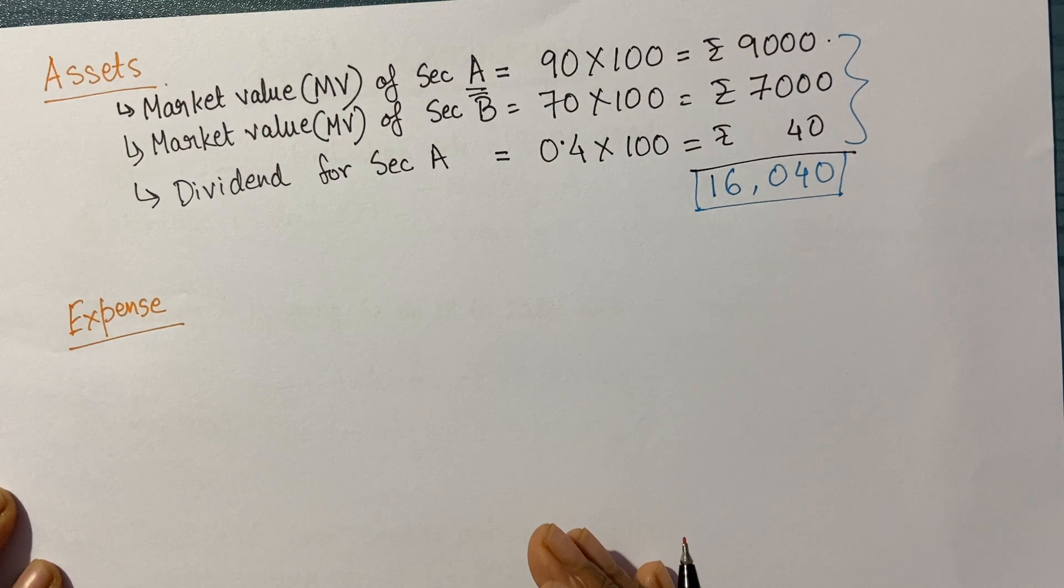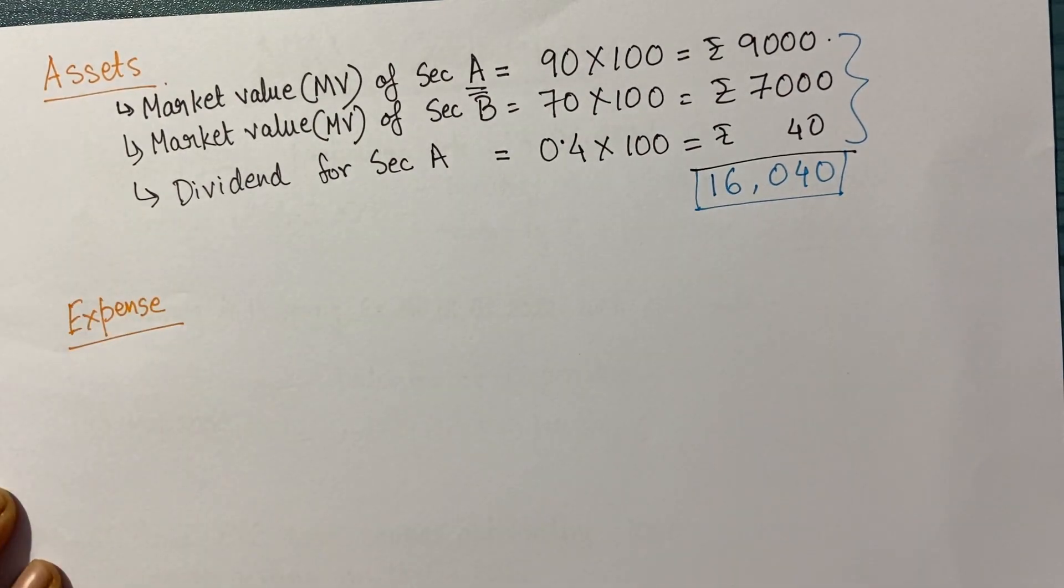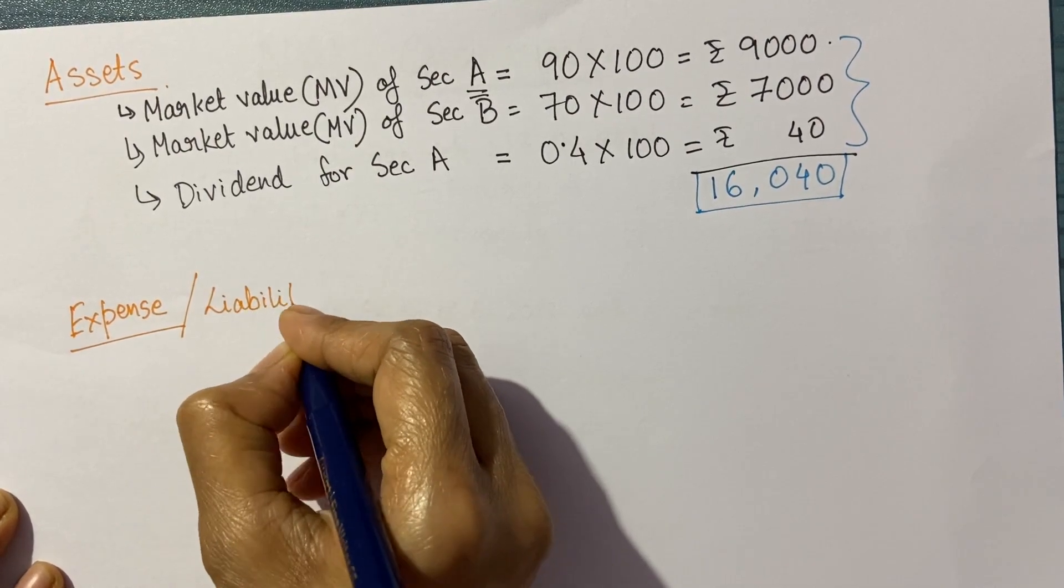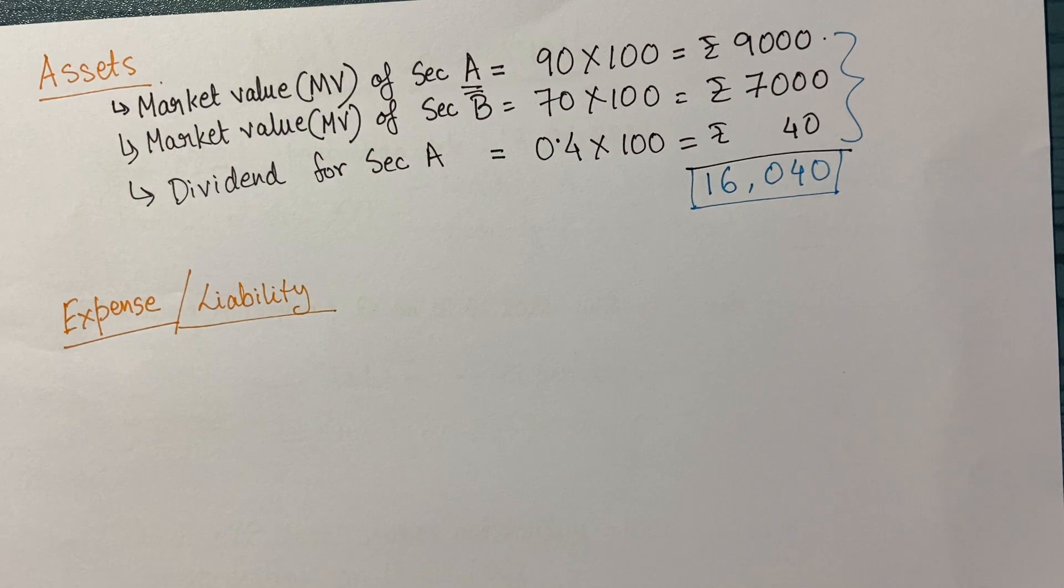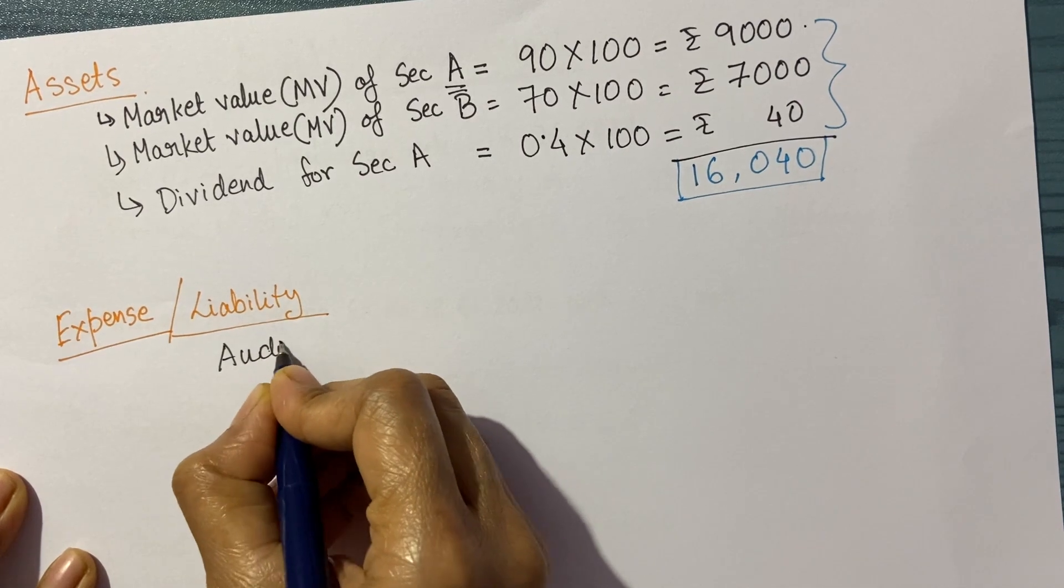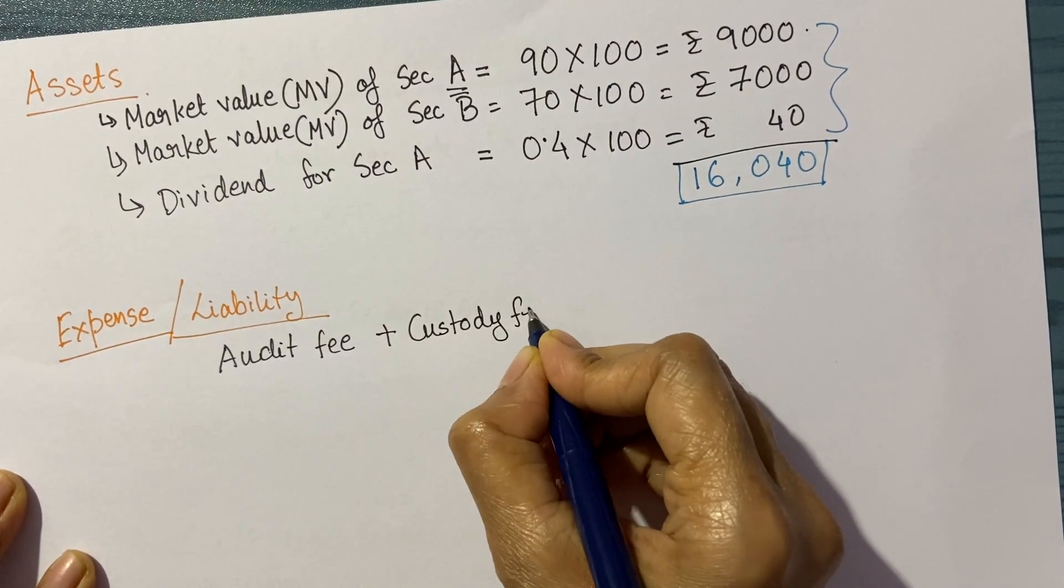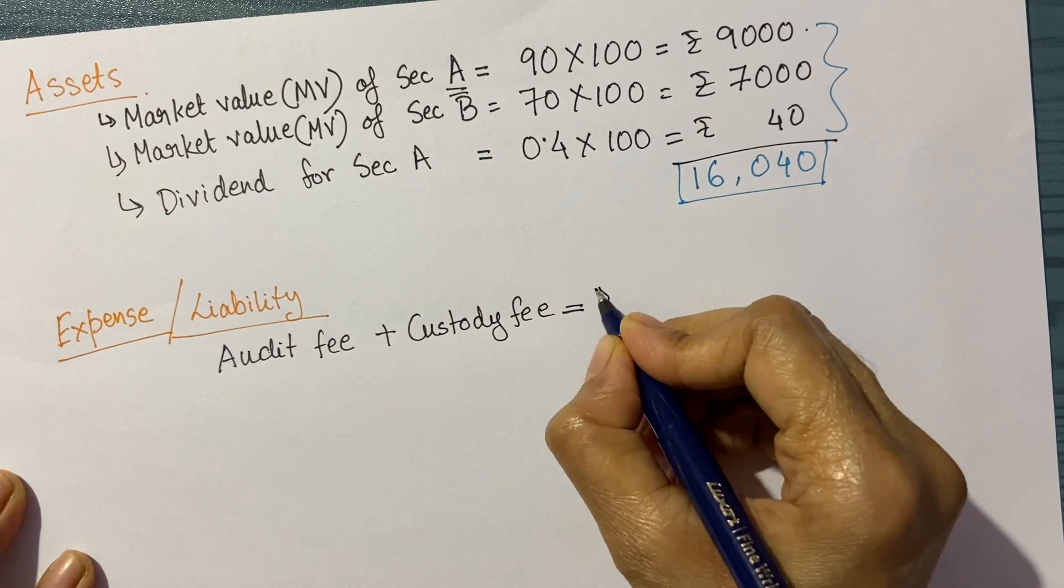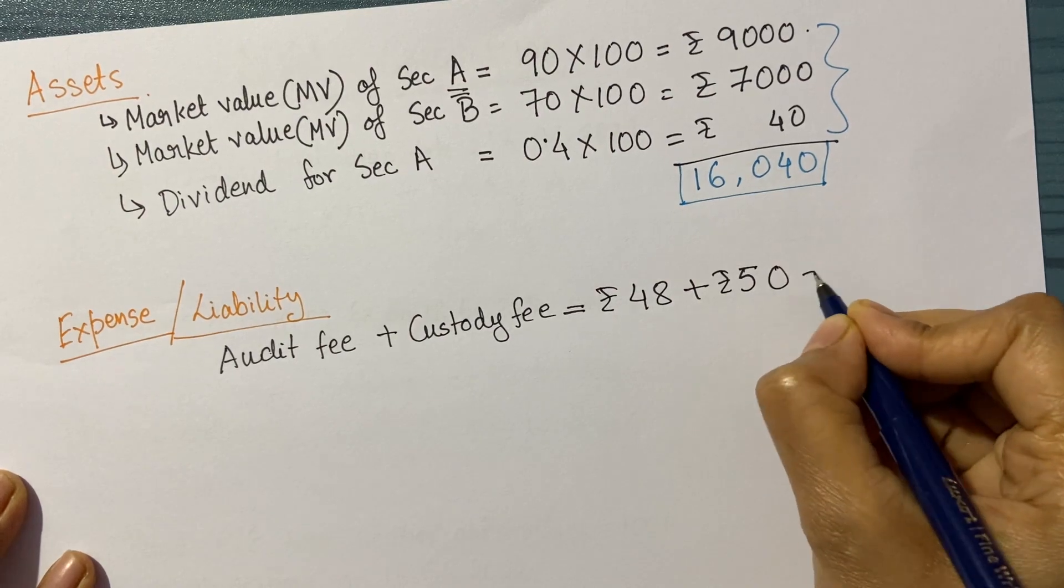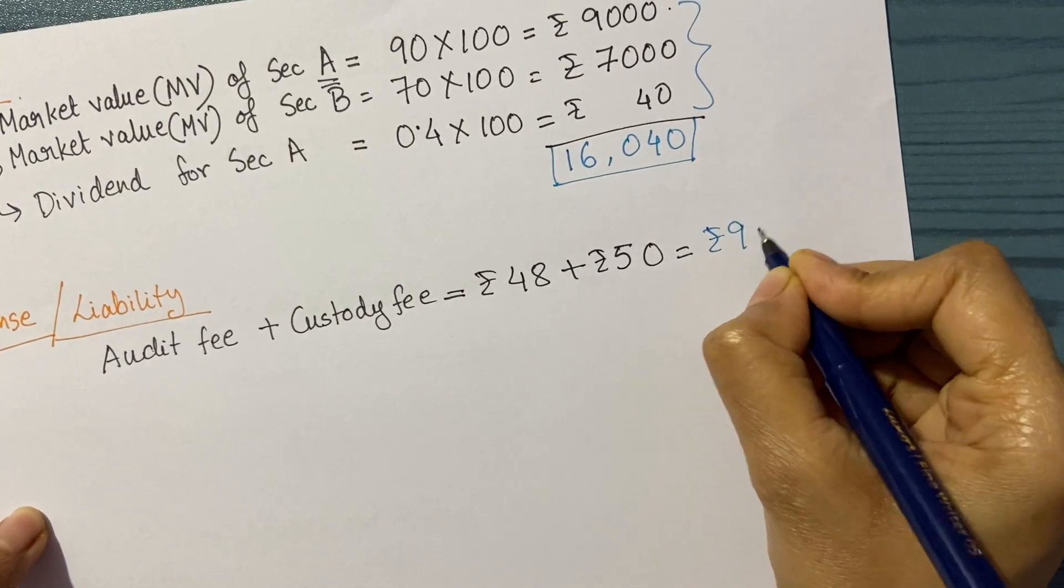Whenever we have a trade, we'll have realized gain or loss if there's a sell, and those would also come under assets. Now I'm calculating the expense, or liability. As I said, we have audit fee and custody fee. Audit fee plus custody fee is 48 rupees plus 50 rupees, so my liability is 98 rupees.